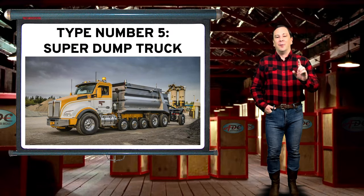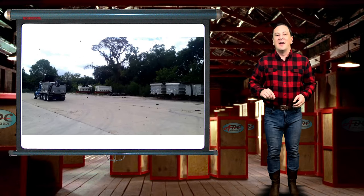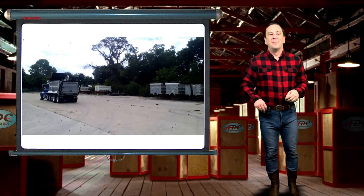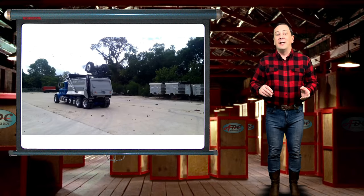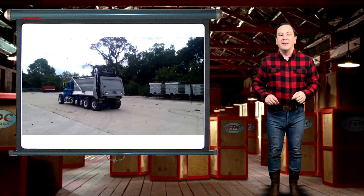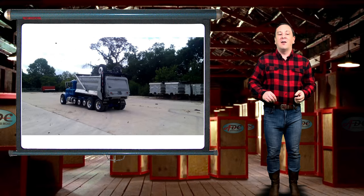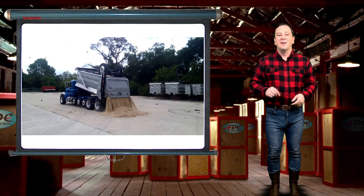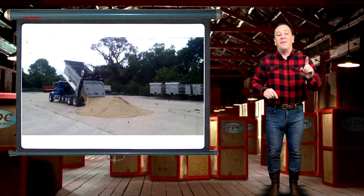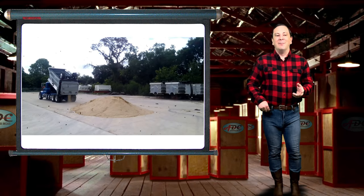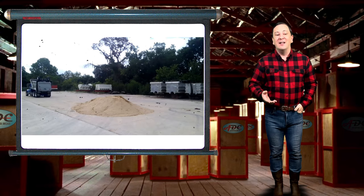Type number five: the super dump truck. A super dump truck is equipped with liftable pusher axles and a liftable trailing axle which extends 11 to 13 feet behind the rear axle to stretch out the outer bridge measurement and maximize overall length. When the driver is ready to dump, the trailing axle is raised up on two hydraulic arms to clear the rear of the vehicle. This configuration allows the maximum gross weight in states that conform to the Federal Bridge formula. These trucks can be rated as high as 80,000 pounds gross vehicle weight and carry 26 tons of payload.